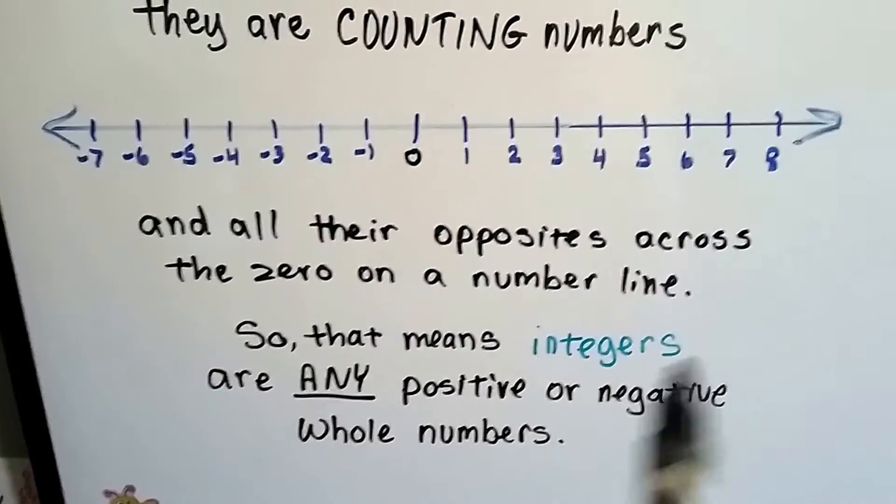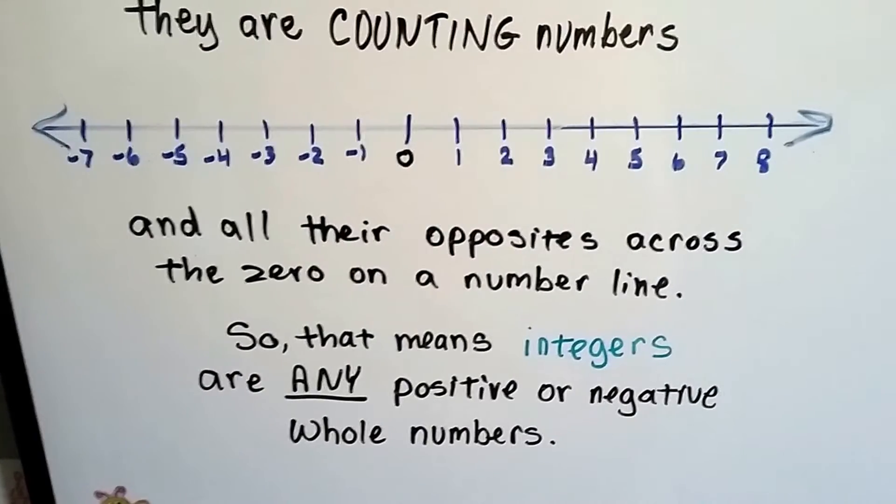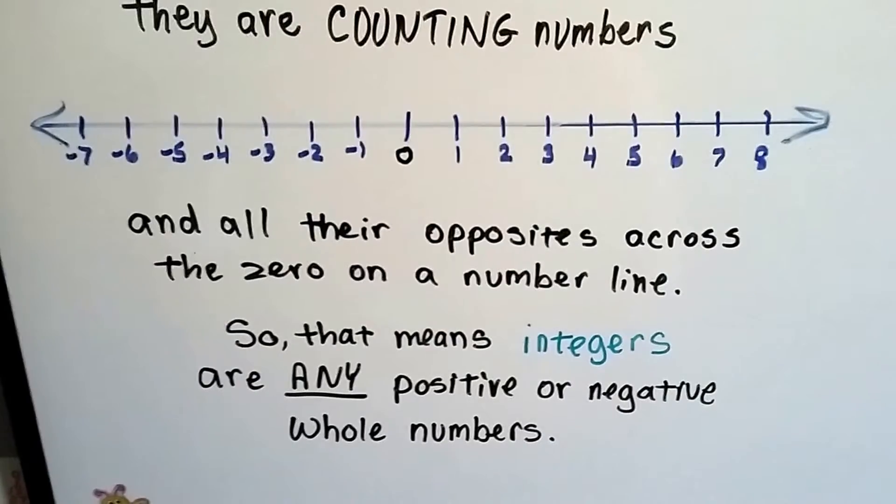And these go on infinitely. That's why there are arrows on each side of the number line. It means it goes on forever. It could be negative a million and positive a million. Those are integers.